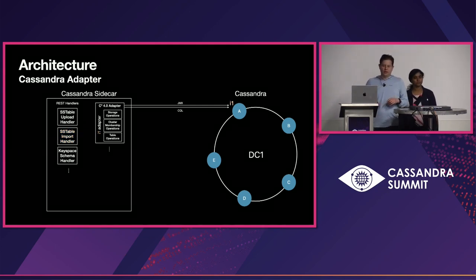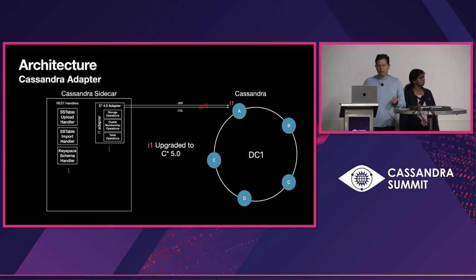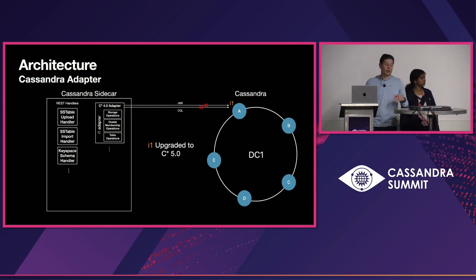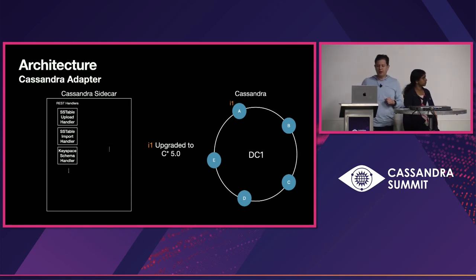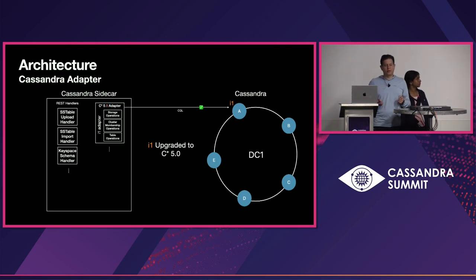Now let's say we want to upgrade to Cassandra 5. What Sidecar is going to do is notice that there will be a disconnection when we start to upgrade this node, so we no longer have the adapter. We are still going to do the health checks, and when we are able to establish the CQL connection, we can bring a new adapter for Cassandra 5.0.